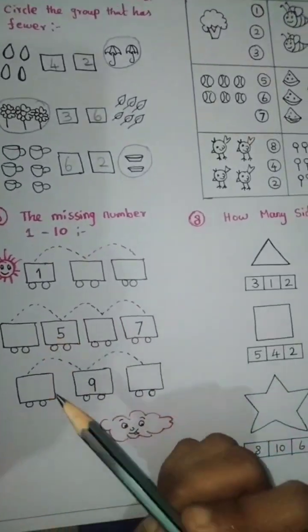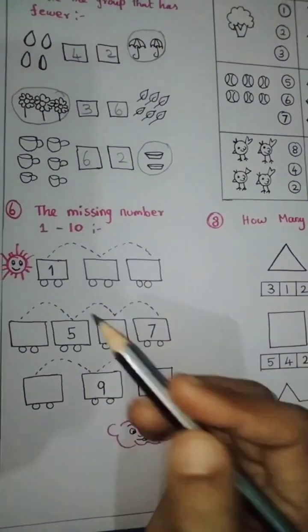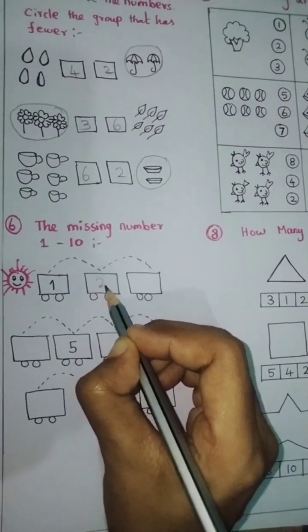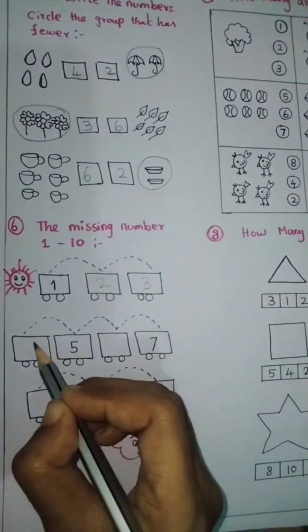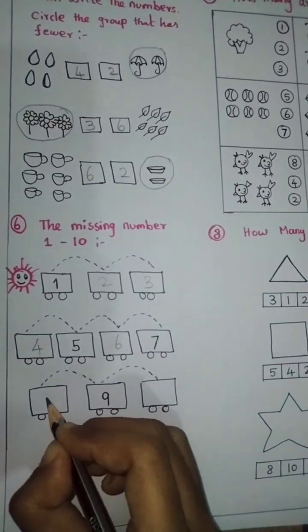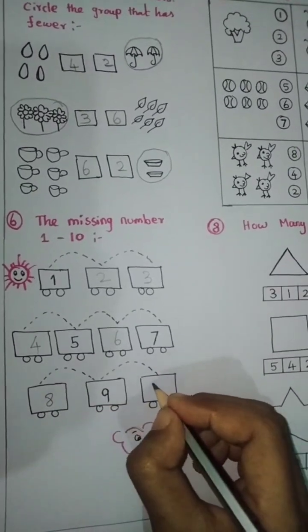The missing number 1 to 10. Sun reaches to cloud. 1. Next, missing number 2, 3, 4, 5, 6, 7, 8, 9, 10.